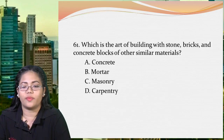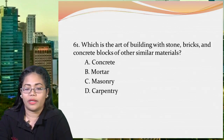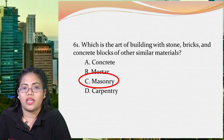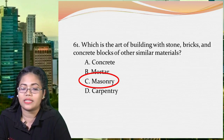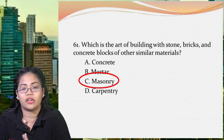Next question: what is the art of building with stone, bricks, and concrete blocks or other similar materials? A: concrete, B: mortar, C: masonry, and D: carpentry. The answer is letter C, masonry. Always remember: when it says stone or bricks, it is masonry. When it says wood or lumber, it is carpentry. Concrete and mortar are materials used in masonry — concrete is hardened mortar, and mortar is the mixture of water, sand, and cement.